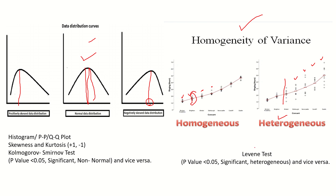To check homogeneity of variance, we use Levene's test. If the p-value is less than 0.05, the result is significant, meaning the data is heterogeneous. If the p-value is greater than 0.05, the result is non-significant, meaning the data is homogeneous and the assumption of homogeneity of variance is maintained. If data is homogeneous, we can select the parametric test.